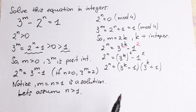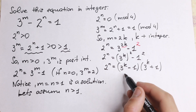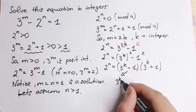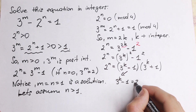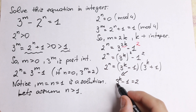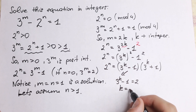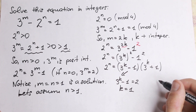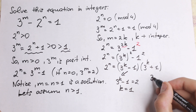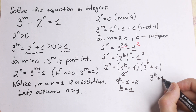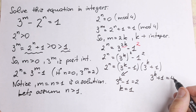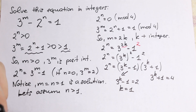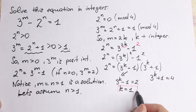Splitting the difference of squares, we get 2 to the n equal to (3 to the k minus 1) times (3 to the k plus 1). Since 2 to the n is a power of 2, we get two cases: 3 to the power k minus 1 equal to 2, giving 3 to the k equal to 3, so k equal to 1. And 3 to the power k plus 1 equal to 4, also giving k equal to 1. So we find k equal to 1.